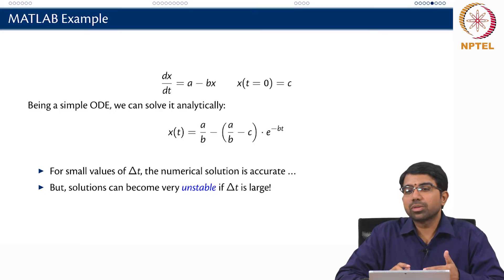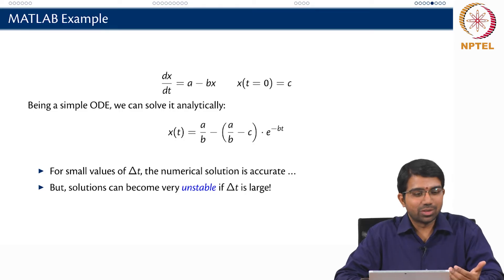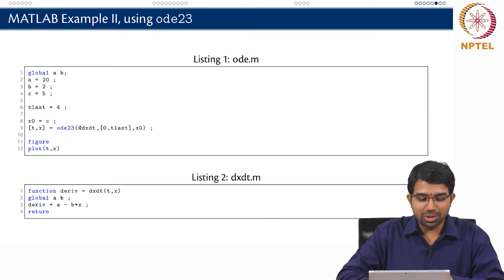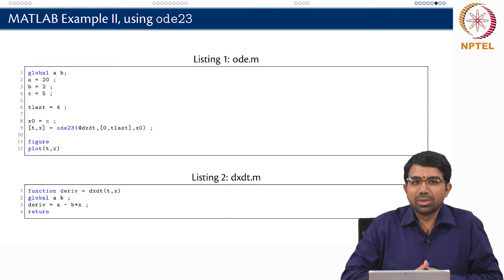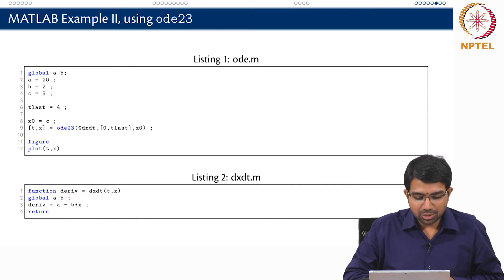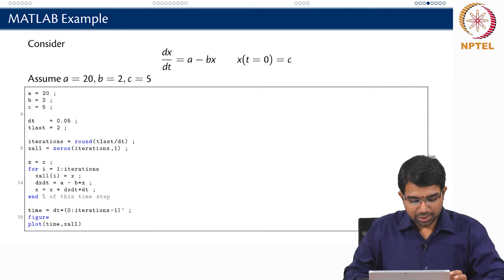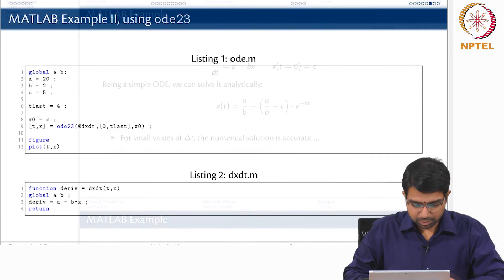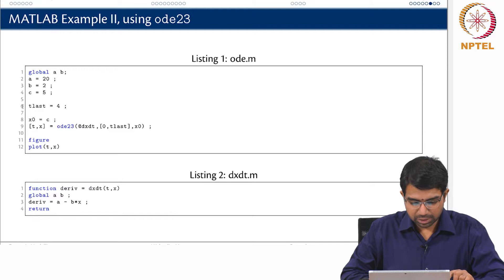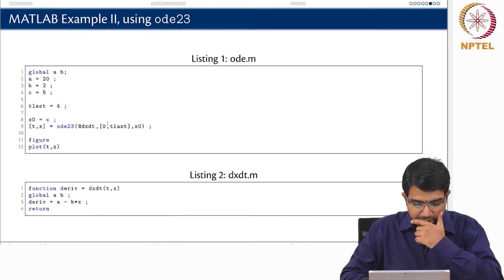But you do not want to be worrying about finding delta t or specifying it manually. There is a simpler way — we just use a built-in ODE solver from MATLAB. The code becomes even more simple: all those lines are replaced by just t, x equals ODE23(dx_dt, 0, t_last, x0). That is it.